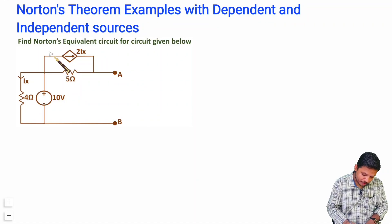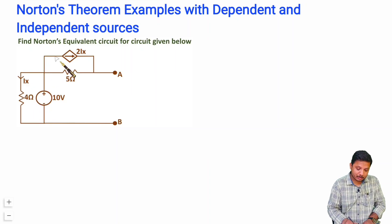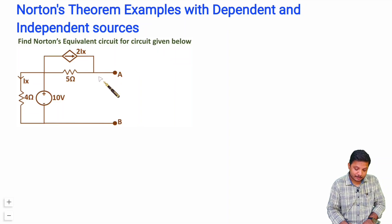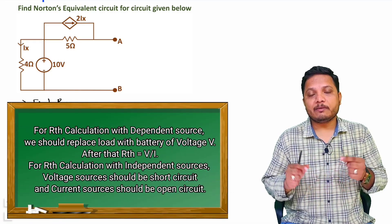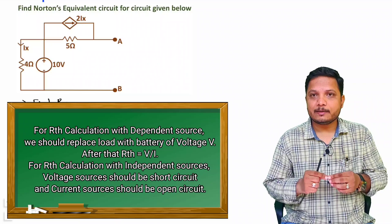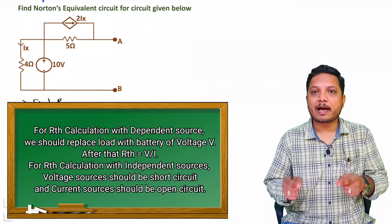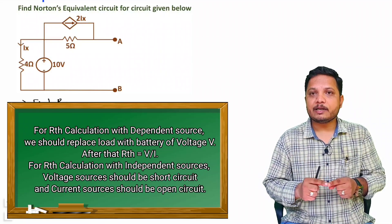We have been given a circuit and we need to find the Norton's equivalent circuit. In this circuit we have a current source of 2·Ix, where Ix is given. In Norton's equivalent we have a current source in parallel with an equivalent resistance. For dependent sources, whenever you want to calculate equivalent resistance — for Thevenin's as well as Norton's — you provide a voltage source at the load and whatever current is induced by that voltage source, V/I gives the equivalent resistance.